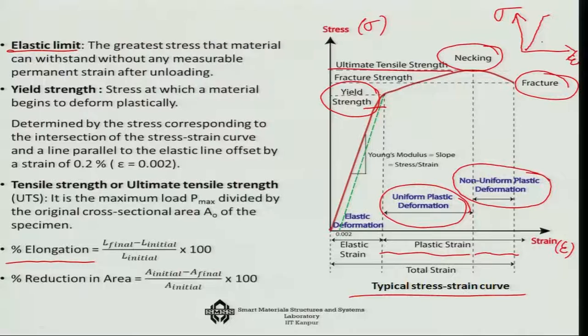Another important point is that if you do not find a very sharp yield point, we conventionally use the 0.002 strain level — that is the 0.2% strain level — and where the offset line intersects the curve, that point is defined as the yield strength. This is generally the strength level that metals can take without permanent deformation. However, for elastomers or rubbers, this offset can become something like 5% to 10%, so the position changes depending on the material.